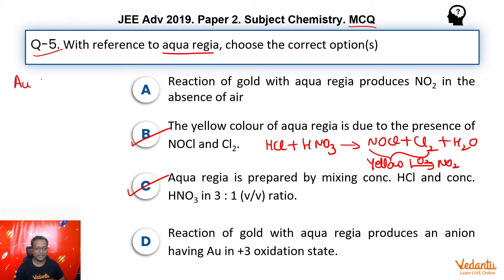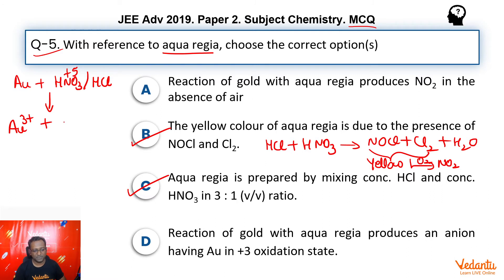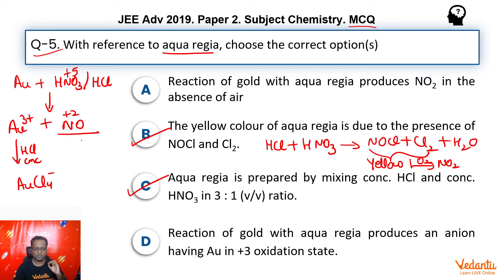Therefore, yes, the yellow color of aqua regia is due to NOCl and Cl₂. Aqua regia is a very strong oxidizing agent. When we dissolve gold in aqua regia, gold goes up to +3 oxidation state, and nitrogen which is in +5 comes down to NO, that's +2. In concentrated HCl, gold forms a soluble complex — AuCl₄⁻. If air is absent, the reaction stops here.